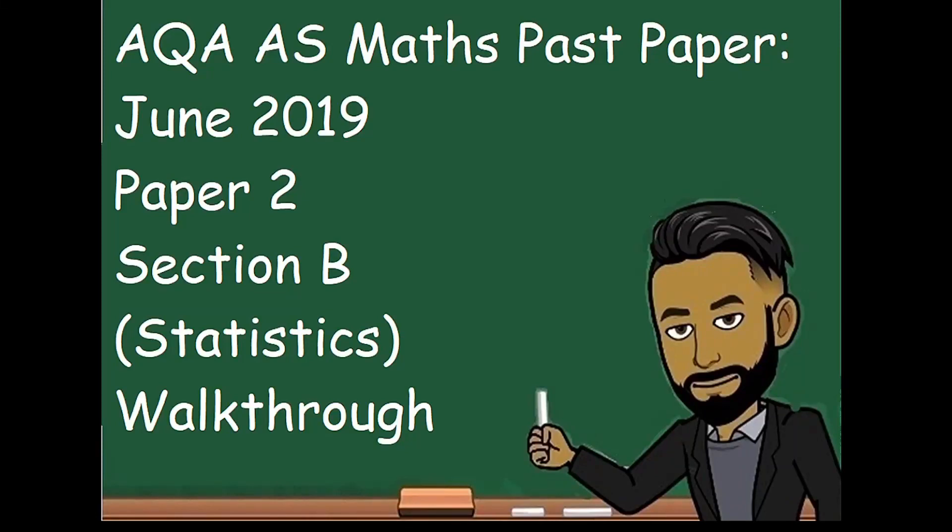Welcome to this latest video, 162 maths. In this video we'll be going over the AQA AS maths past paper of May/June 2019 paper 2 section B, which is the statistics section. I'll include a question breakdown in the description below so you can see which question refers to which topic.